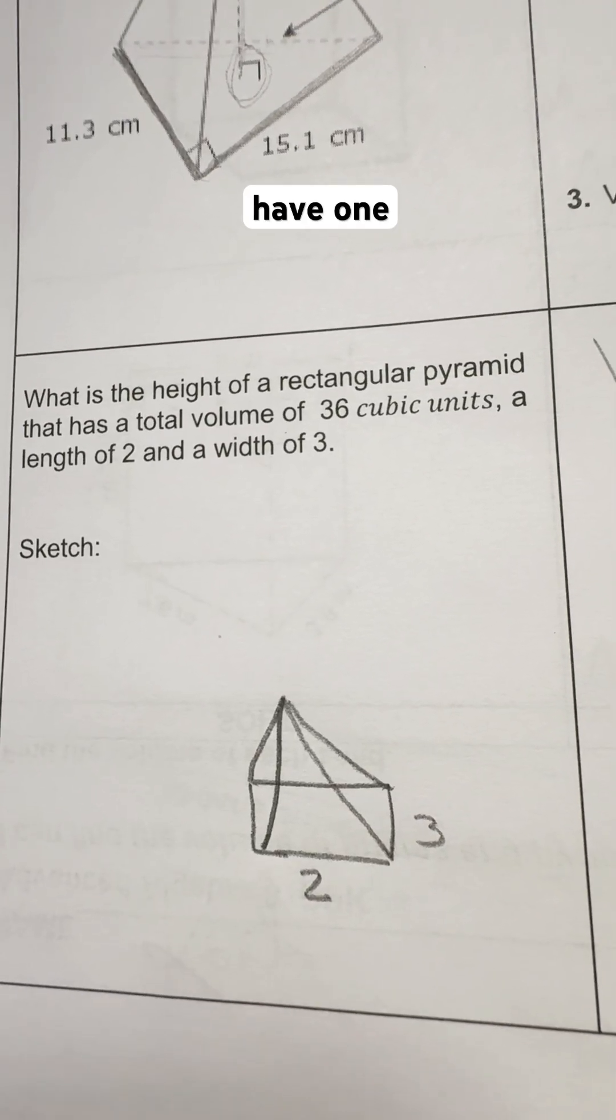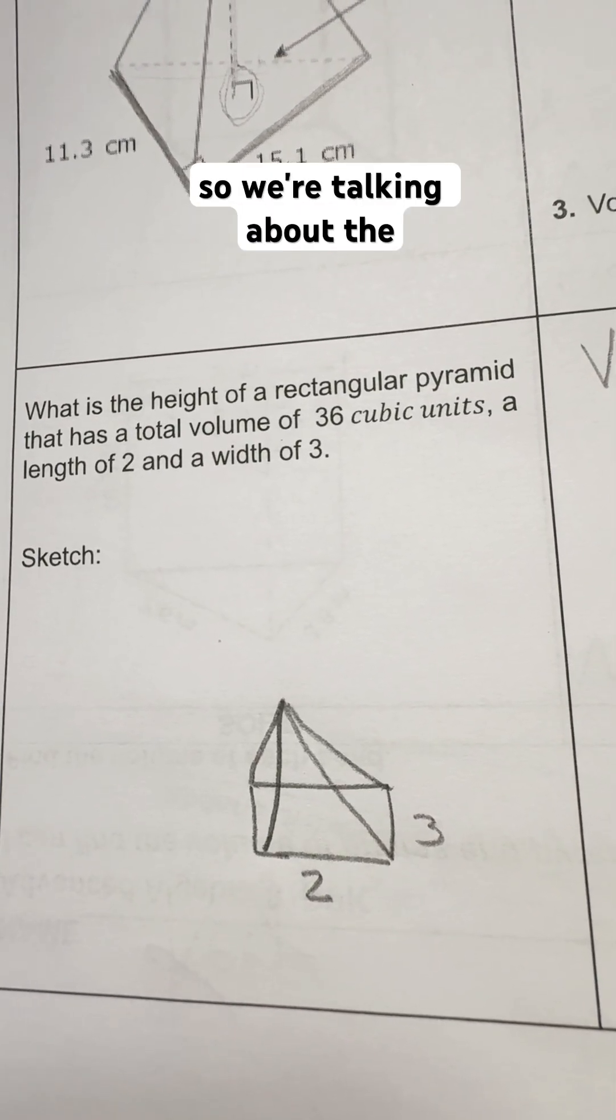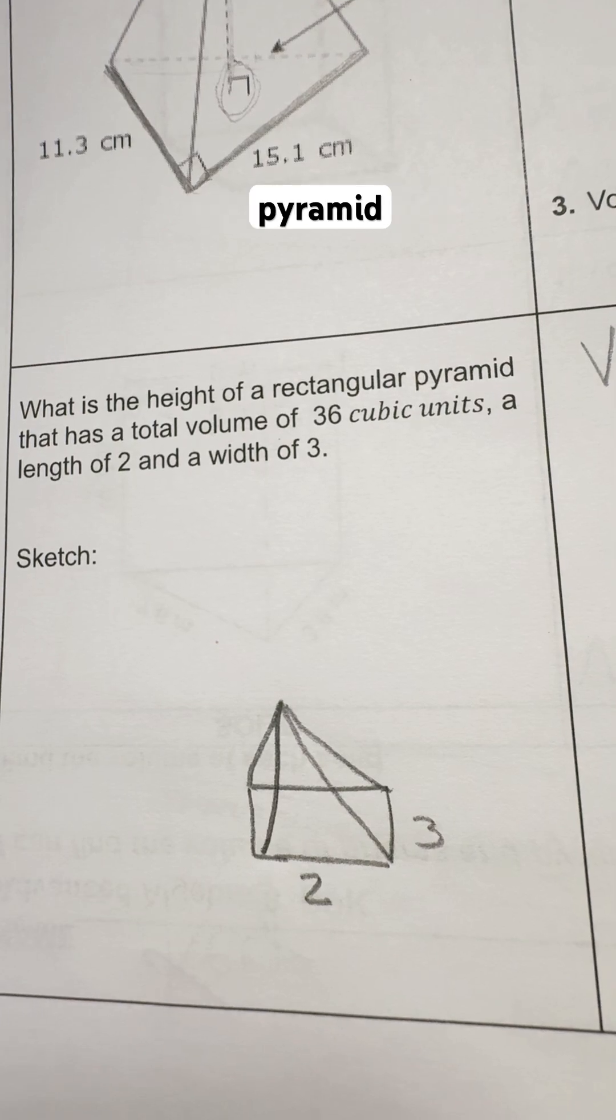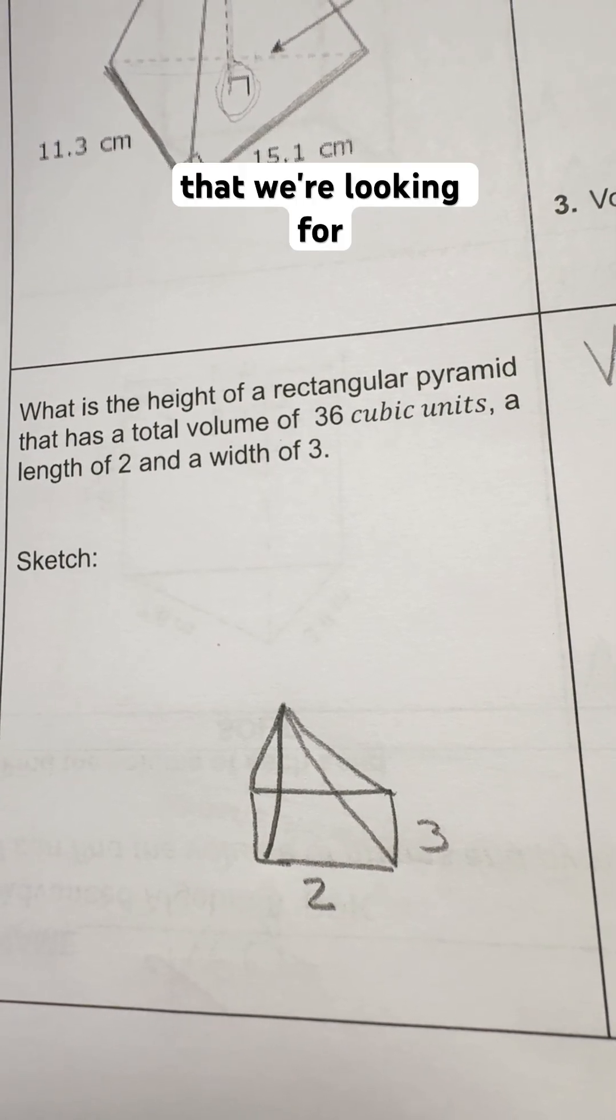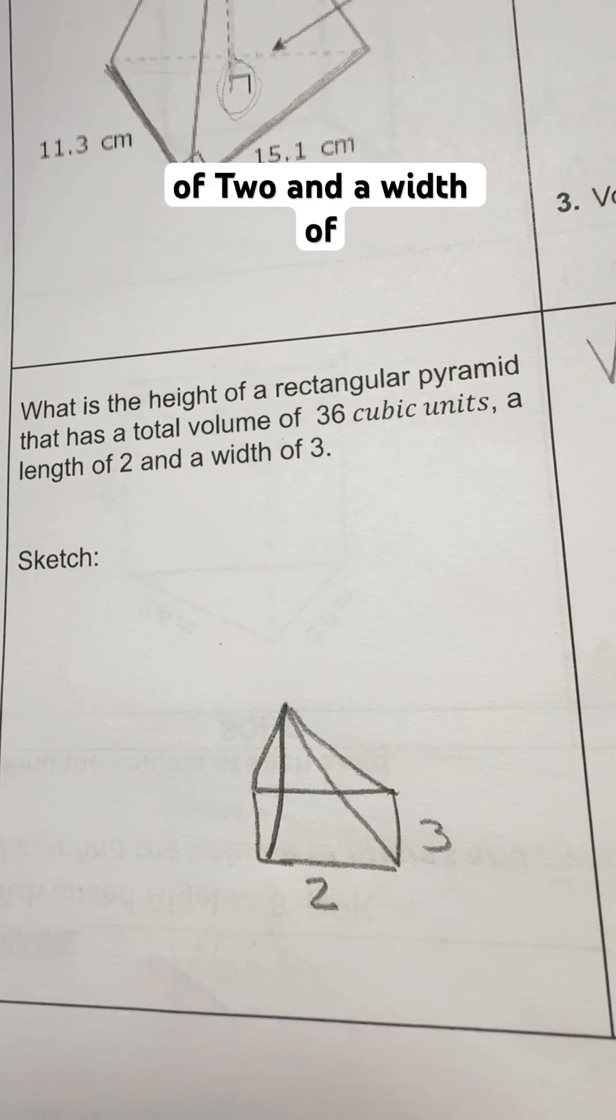All right, we have one last problem on this worksheet. We're talking about the height of a rectangular pyramid that has a total volume of 36 cubic units that we're looking for, and then we have a length of 2 and a width of 3.